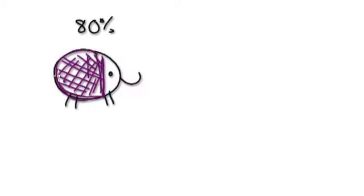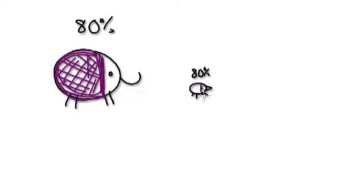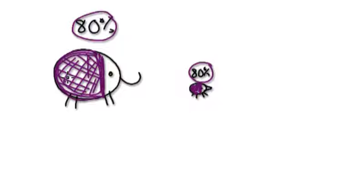Eighty percent gives you an indication of how big something is in comparison to the whole thing. You could have a mouse here, and you could still have eighty percent of the mouse — that would be this part here. So percentages are a good way for us to communicate how small or how big something is in comparison to the whole thing.